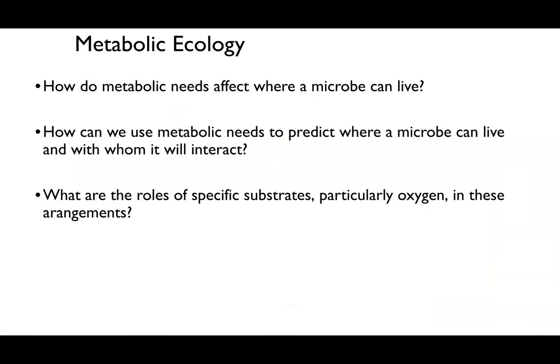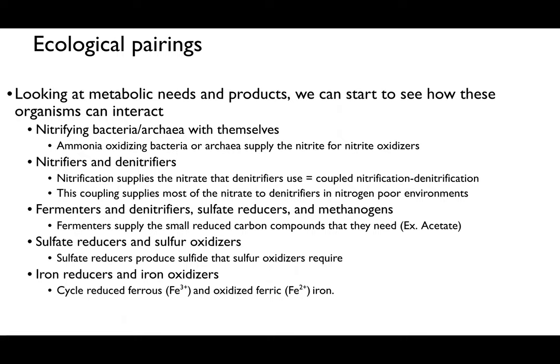Photosystems are not as important for microbial ecology as respiration is, but one of the interesting things about bacterial metabolism is how microbes interact with one another in nature. For the remainder of this lecture we'll answer: how do metabolic needs affect where a microbe can live, how can we use metabolic needs to predict where a microbe lives and with whom it can interact, and what are the roles of specific substrates — particularly oxygen — in these arrangements?